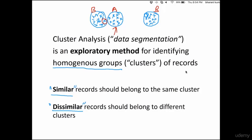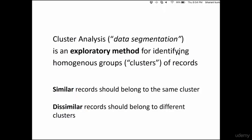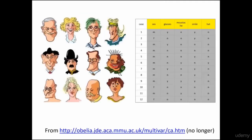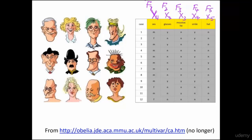Whenever you work on a dataset, you would never get access to the complete population — you always employ sampling and do this activity on a sample. Now look at this example. How many features do we have here? We have a feature called sex, let's call it x1. We have x2, x3, x4, and x5 — so five features in total: feature 1, feature 2, feature 3, feature 4, and feature 5. The input variables are also called features, and all the features put together are called a feature set.